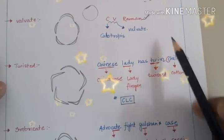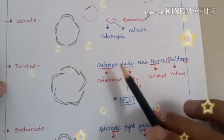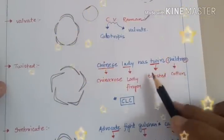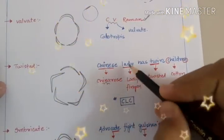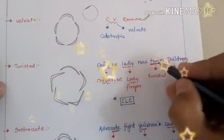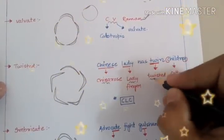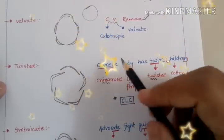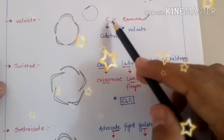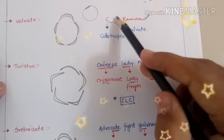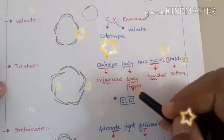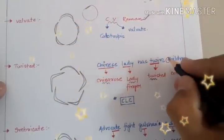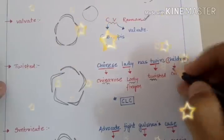The trick to learn Twisted Estivation examples: 'Chinese lady has twin children.' Chinese means China rose, lady means lady finger, twin means twisted (T-W-I is common between twin and twisted), and children — starting from C and ending at N — simply means Cotton.